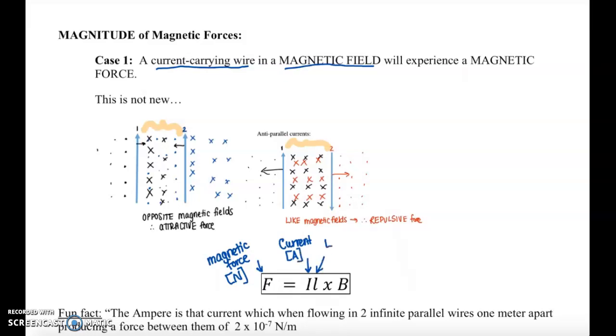F is simply standing for the magnetic force, measured in newtons, of course. I is the current, measured in amps, just like before. L is going to be the length of the wire, measured in meters. And B is the magnetic field, just like we learned in the last class, and that is measured in teslas.